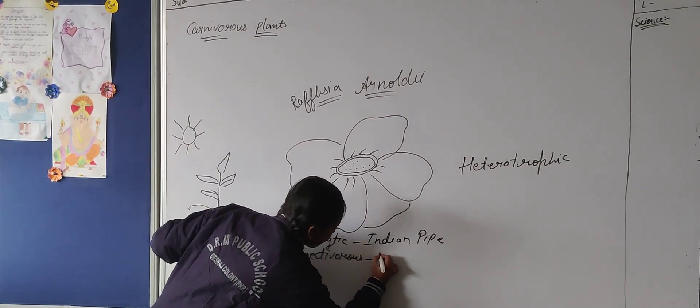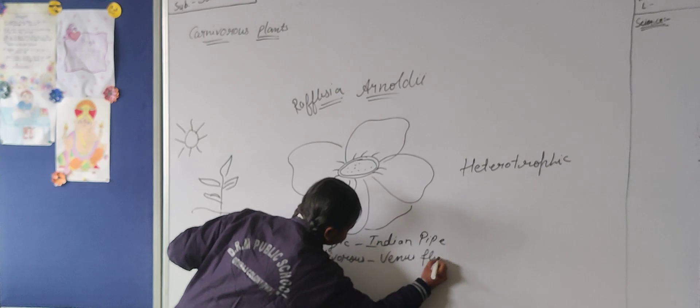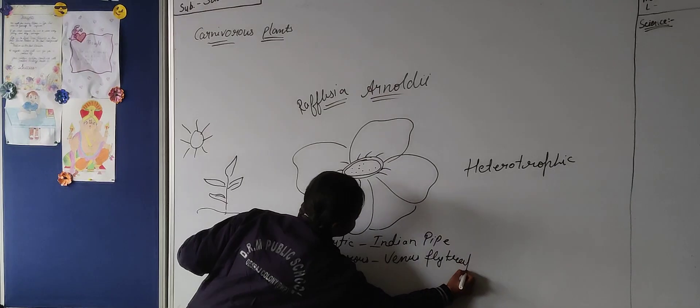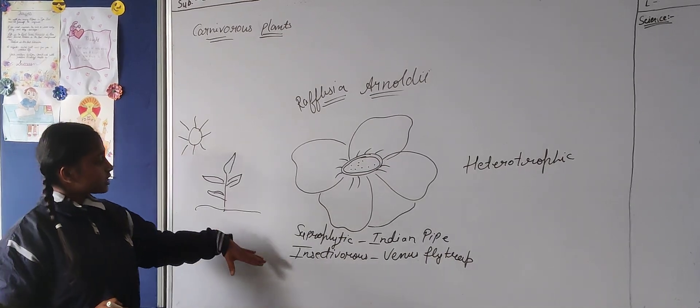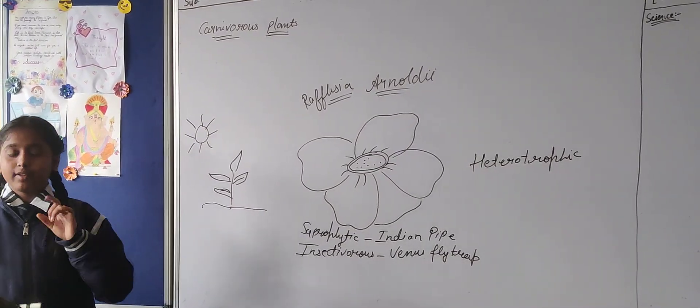Like Venus flytrap. Venus flytrap also does not have chlorophyll and it is grown in this type of soil which have lack of mineral.